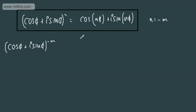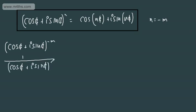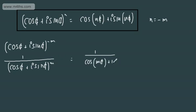All I've done is swap n for negative m. We know that if we have a negative index, we can write this as 1 over (cos θ + i sin θ) to the power of positive m. We've shown that (cos θ + i sin θ)^n = cos(nθ) + i sin(nθ), so this becomes 1 over cos(mθ) + i sin(mθ).